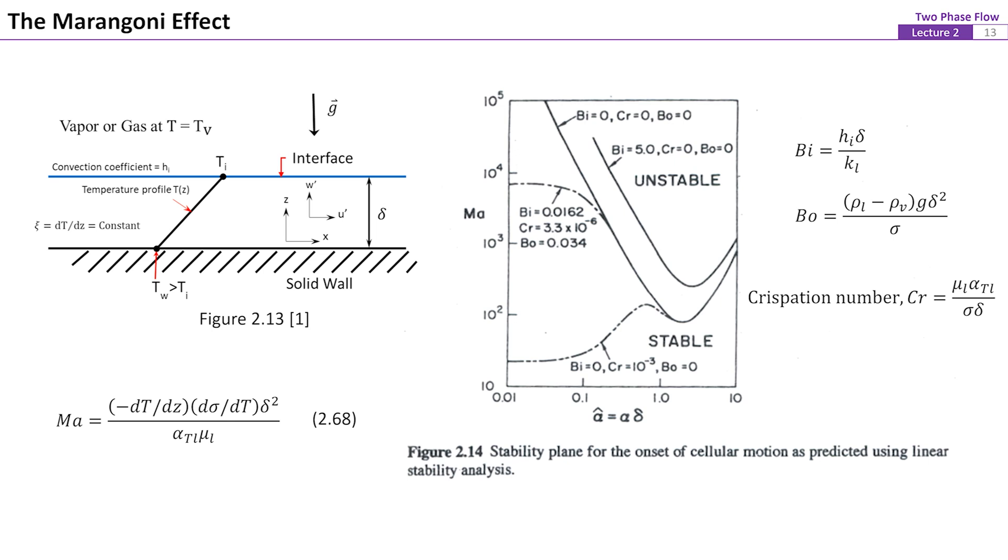For the horizontal axis, alpha is the wave number of the perturbation on the liquid vapor interface. Standard definitions for the Biot number and the Bond number are also specified. Kl is the thermal conductivity of the liquid, and Rho is the densities of the fluids.